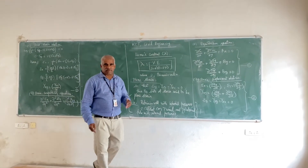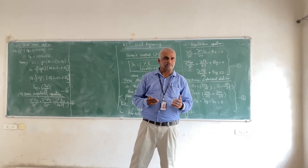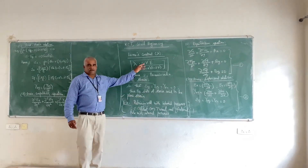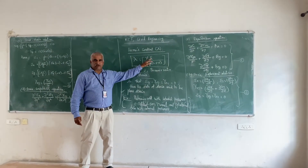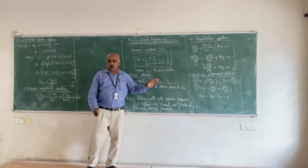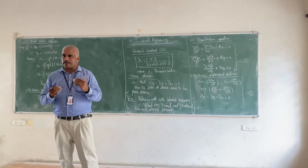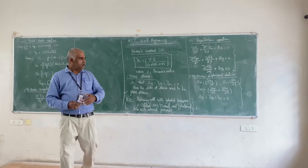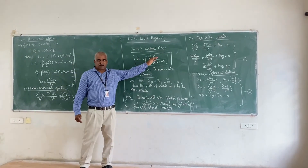Lamé's constant plays a wider role in the theory of elasticity and plasticity, especially in advanced solid mechanics, at both undergraduate and postgraduate level. Lambda is defined as the ratio of Poisson's ratio (nu) times Young's modulus, divided by (1 minus Poisson's ratio) times (1 minus 2·nu), where nu is the Poisson's ratio — the ratio of lateral strain to linear strain.